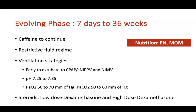The evolving phase runs from seven days to 36 weeks. Every effort should be made to prevent the baby progressing from normal lung growth to BPD. Continue caffeine throughout the early and evolving phase, as this has been shown to decrease incidence and severity of BPD. Continue a restrictive fluid regimen. Ventilator strategies in this phase differ slightly — all efforts should convert babies from invasive to non-invasive: CPAP, nasal IMV, or synchronized NIPPV. Target pH should be 7.25 to 7.35, and permissive hypercapnia with pCO2 of 50 to 70 mmHg is acceptable to prevent volutrauma and barotrauma.